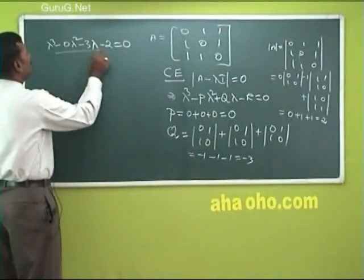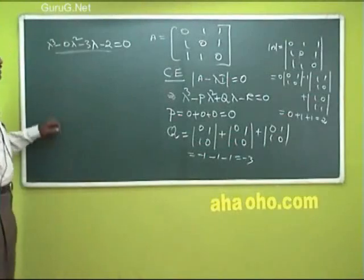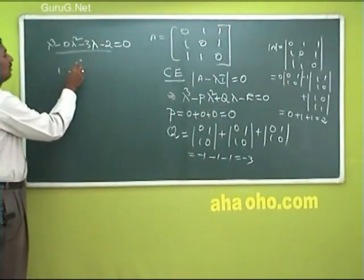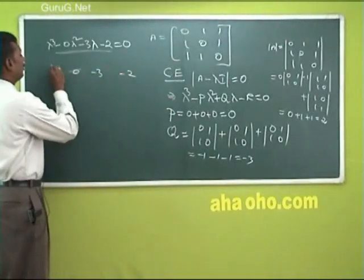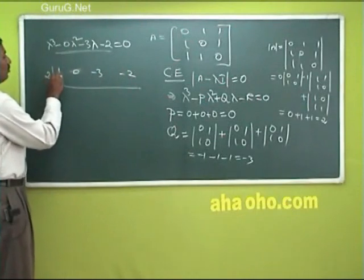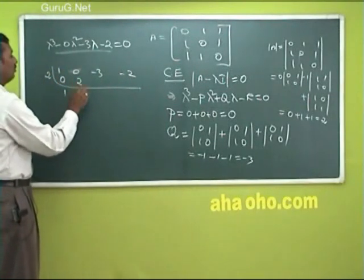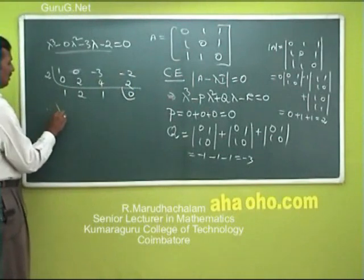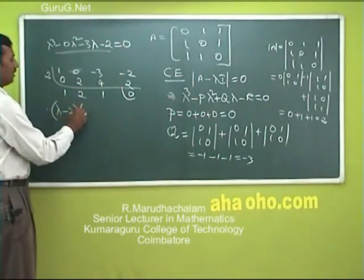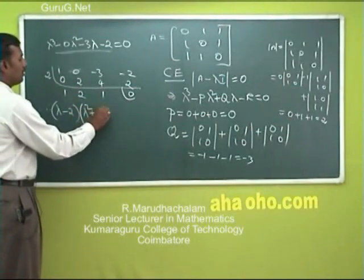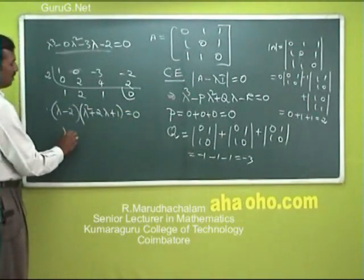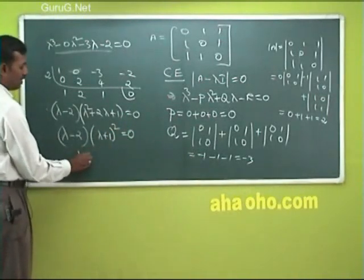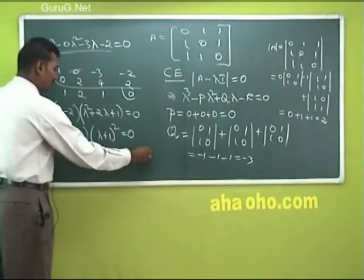The solution of this characteristic equation — let me calculate using synthetic division. Write the coefficients: 1, 0, minus 3, minus 2. Put lambda equals 2: we get 0, 2, 4. So 2 is a root and (lambda minus 2) is a factor. The remaining factor is lambda squared plus 2 lambda plus 1 equal to 0, which is (lambda plus 1) squared equal to 0. So lambda equals 2, minus 1, minus 1.